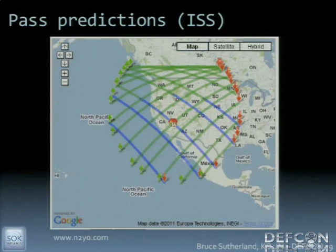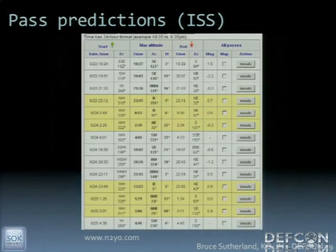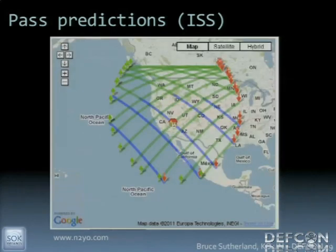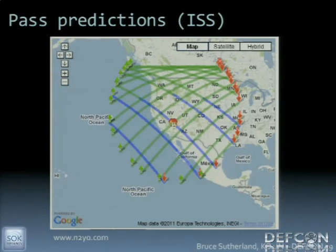Here's another graphic from N2YO. If you check all the overlay boxes on the map, you see the footprint circle of the satellite. Centered over Las Vegas, you can see the range — you can reach up into Canada. The flat part at the top of the circle is due to the curvature of the earth. I'm from central Florida, and I routinely get packets coming in from Canada, Mexico, and even Cuba.